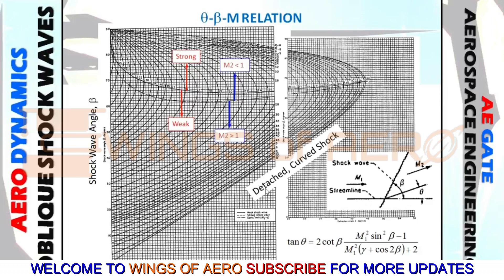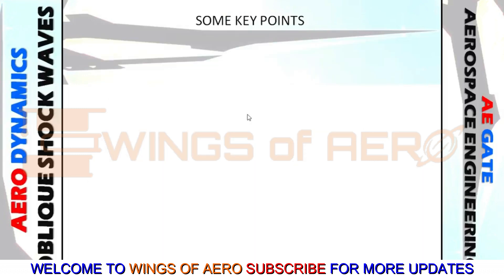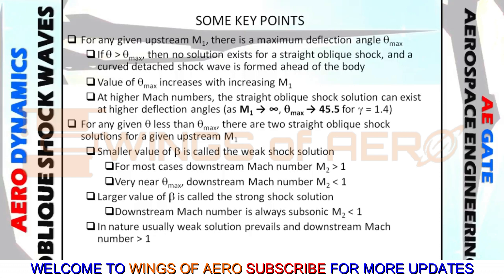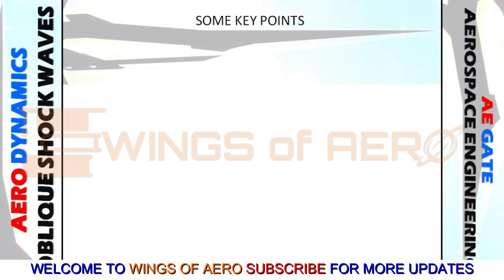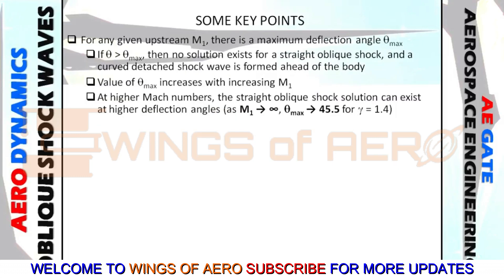From that theta-beta-Mach number relation, a curve has been generated for solving various problems. Now some key points: For a given upstream Mach number, there is a maximum deflection angle theta max. There is a limitation on deflection — we cannot exceed it arbitrarily. If theta is greater than theta max — for example, if theta max is 45 degrees and we try to exceed that — it causes a detached curved shock wave ahead of the body.